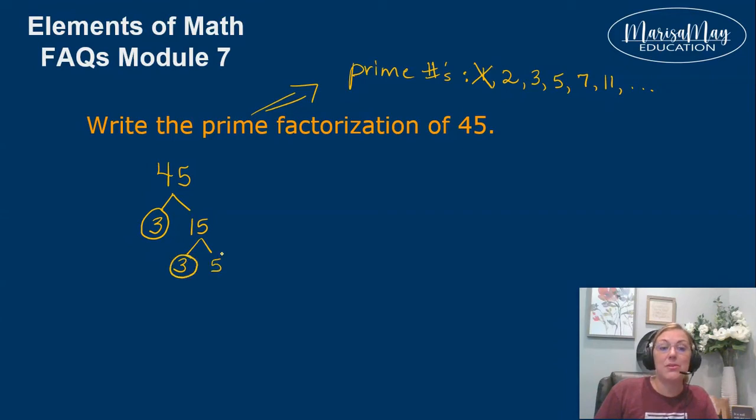Both of those are prime numbers, so I'm circling it. So now I'm ready to write my prime factorization. Remember those numbers we circled? That's your prime factorization. 3 times 3 times 5.